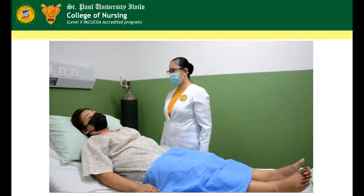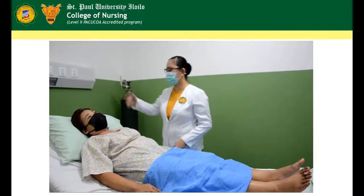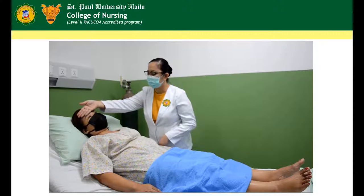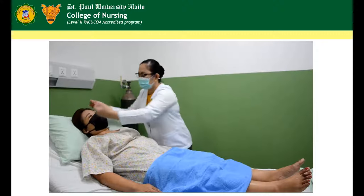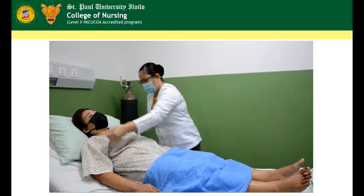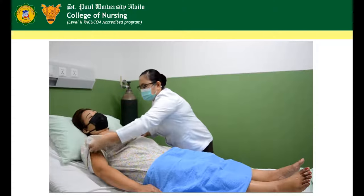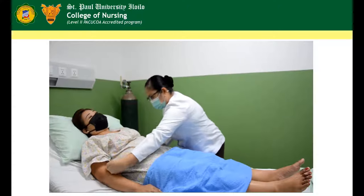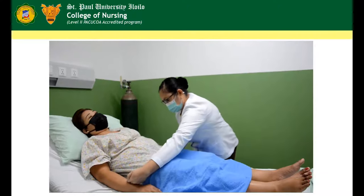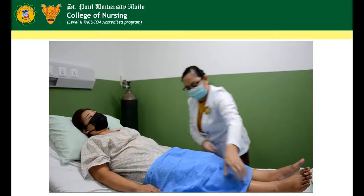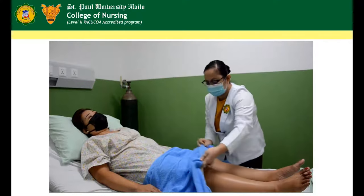Check skin temperature with the back or using palms of the hands. Palpate the forehead or face first, then continue to palpate inferiorly including the hands and feet, comparing the temperature on the left and right side of the body to determine if they are symmetrical.